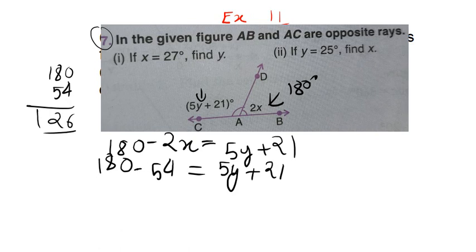So, 126 is equal to 5y plus 21. This is what we know, and now you can see that if 126 is equal to 5y plus 21, we can easily solve this thing.